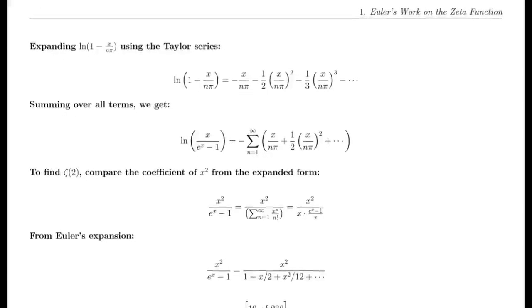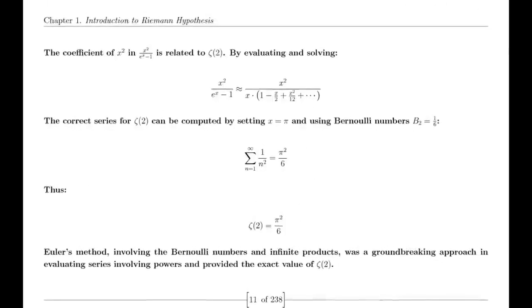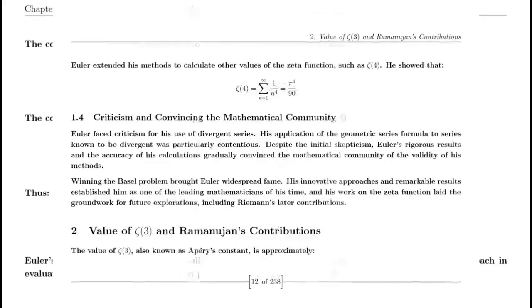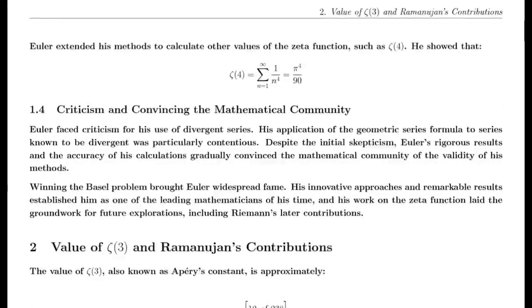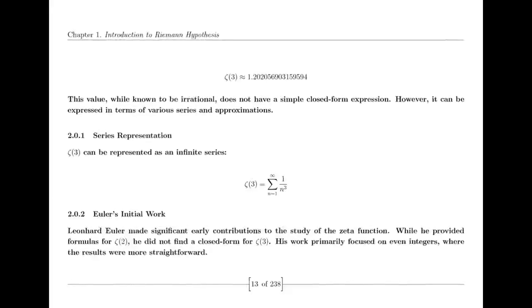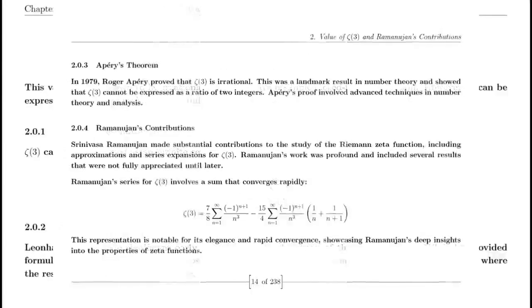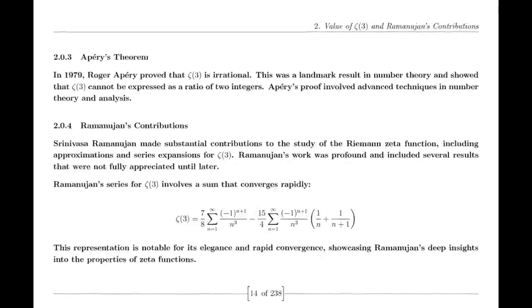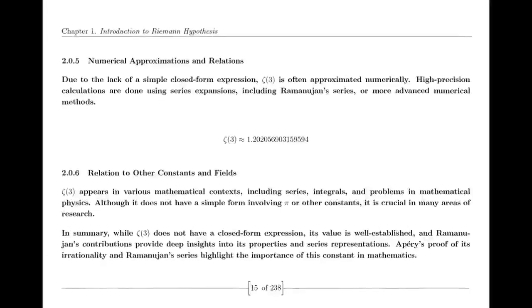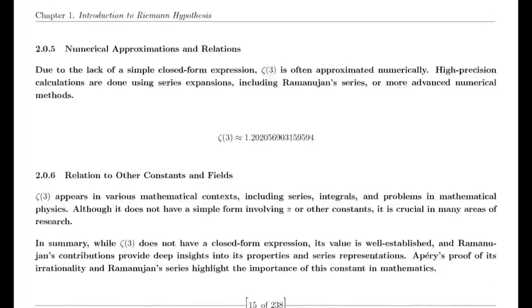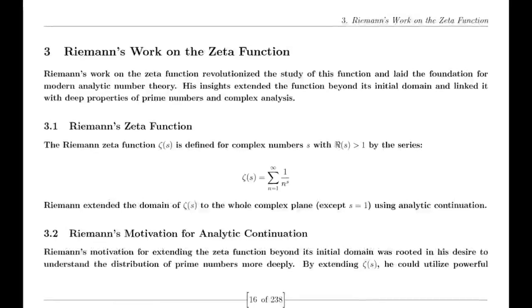In 1859, Riemann published his seminal paper on the distribution of prime numbers, which introduced the zeta function and laid the groundwork for modern analytic number theory. This paper was a milestone in mathematical history. Riemann proposed that all non-trivial zeros of the zeta function lie on the critical line where the real part of s is one-half. This hypothesis has profound implications for understanding the distribution of prime numbers, and despite extensive numerical evidence, a formal proof remains one of the greatest challenges in mathematics.